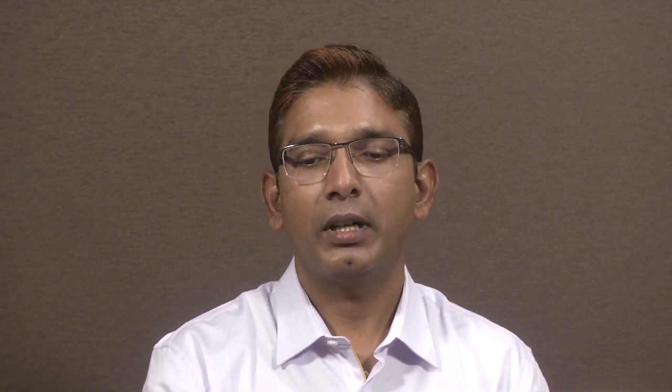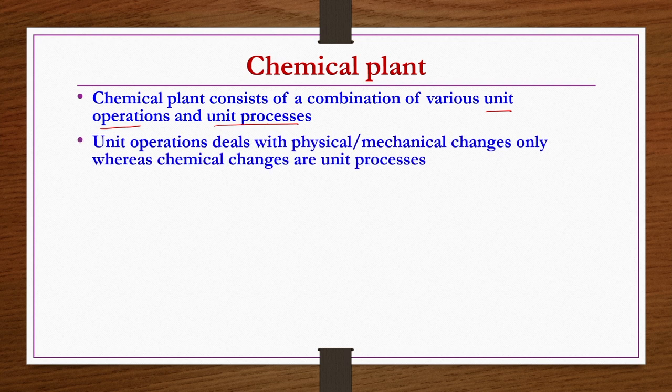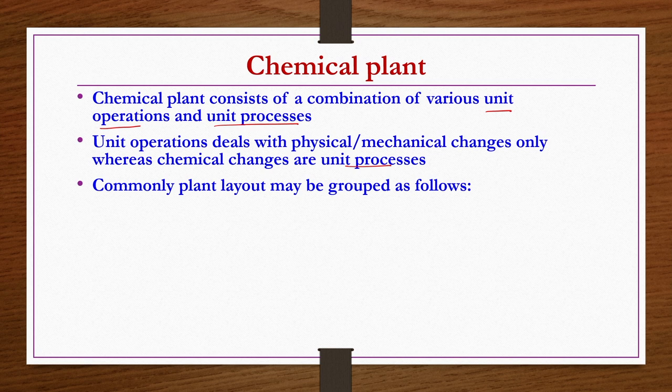What is a chemical plant? A chemical plant consists of a combination of various unit operations and unit processes. Unit operations involve physical or mechanical changes, whereas chemical changes are known as unit processes. The plant layout may be grouped as follows.